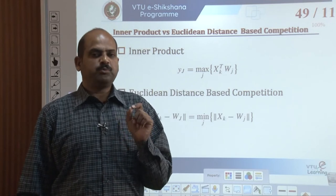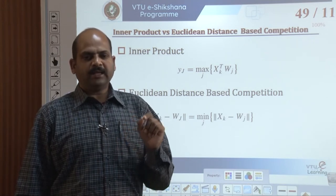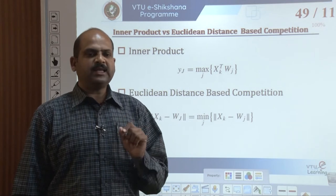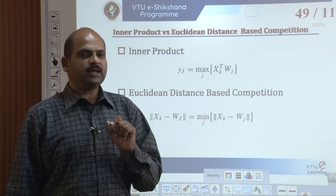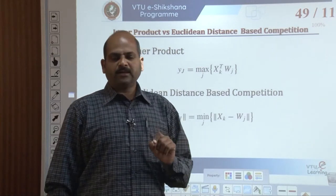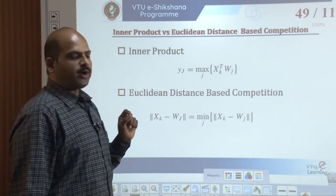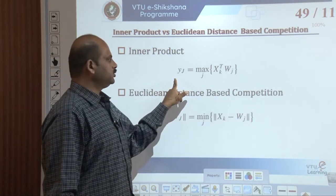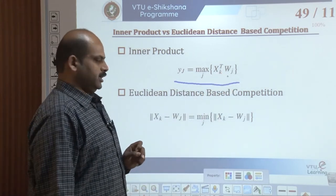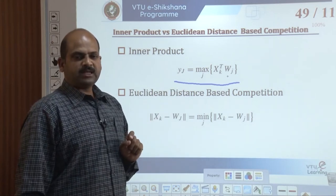The first of the two ways to find the best matching codebook vector is to employ an inner product criterion, selecting a codebook vector by choosing the neuron in the competitive layer that receives the maximum activation. For the current input vector x(k), we compute all neuron activities. The inner product is taken as y_j = max of x_k^T w_j, and the winning neuron index j satisfies this condition.